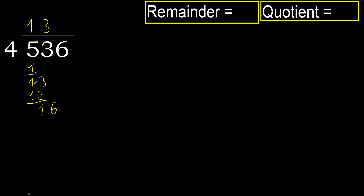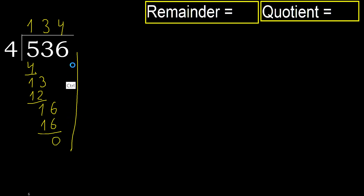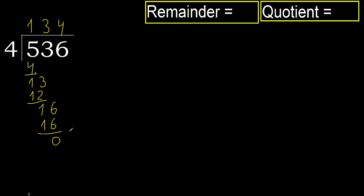16. 4 multiplied by 4 is 16. 16 minus 16 is 0. Next. There is no number, therefore finish it.